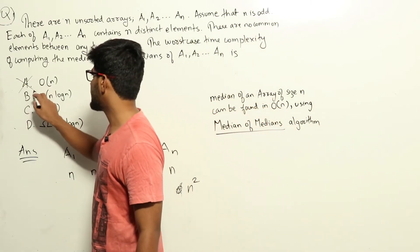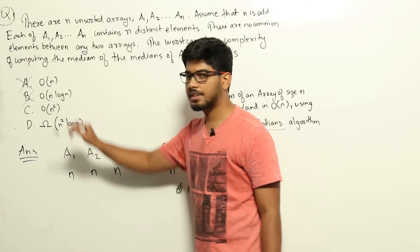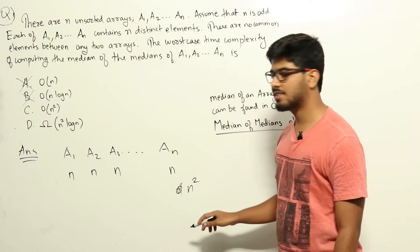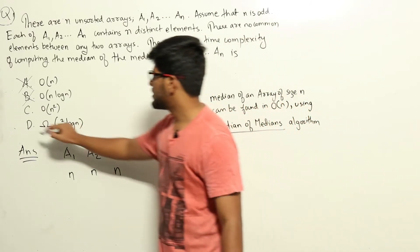So we can directly strike out options a and b. a runs in O(n) and b runs in O(n log n). That is not possible because there are n square elements and we need to read all of them at least once. Now, options c and d remains.